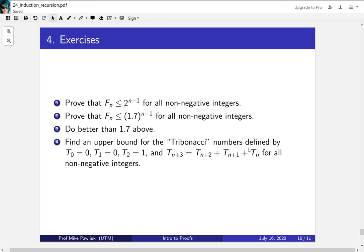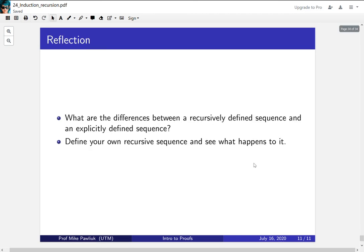Finally, find an upper bound for the Fibonacci numbers, where they're defined in the very similar way, except you add up the three previous numbers. Now let's take a moment to reflect. What are the differences between a recursively defined sequence and an explicitly defined sequence? Define your own recursive sequence and see what happens to it. See if you can get any bounds on it. Okay, thank you very much and have a great day.